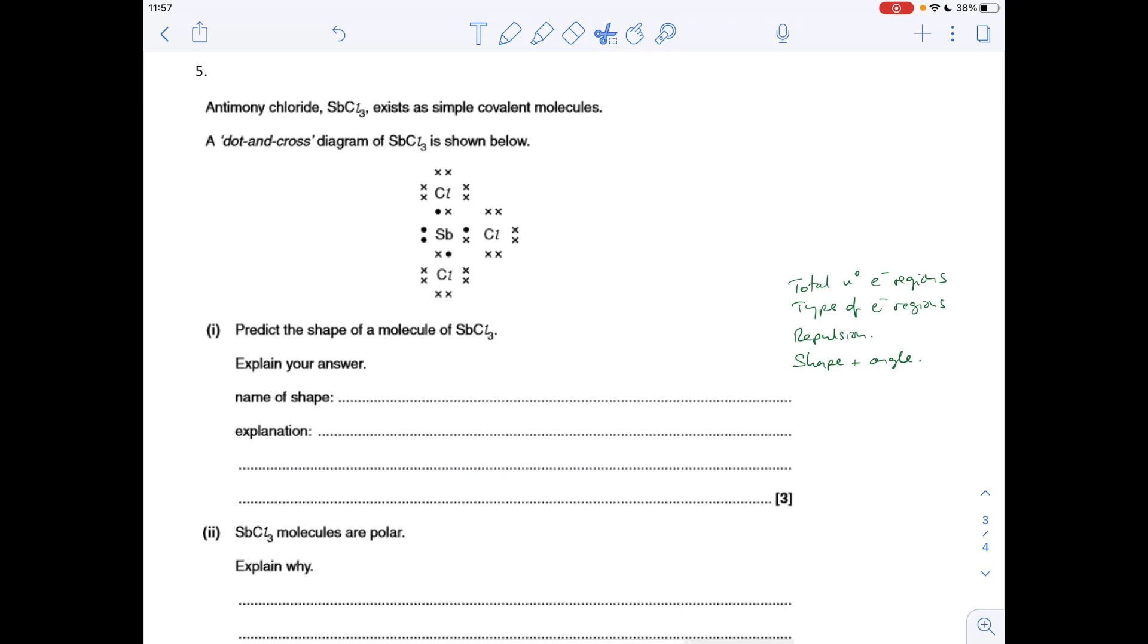Question five, you'll see again, there's my checklist. We've got to predict the shape of a molecule of SbCl3. We've been given the dot and cross diagram, which is helpful. The total number of electron regions: one, two, three, four. Type of electron regions: three bonding, one lone. What kind of repulsion have we got? We're going to have unequal repulsion due to the increased repulsion from the lone pair. We've got to come up with the shape. The shape for that would be pyramidal, just like ammonia. That's a standard one I always get students to remember. So pyramidal shape, four electron regions around the antimony in SbCl3, three bonding and one lone. The important thing just to say is these electron regions repel.